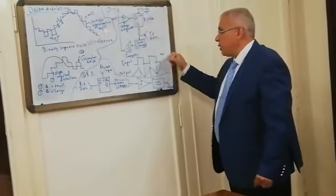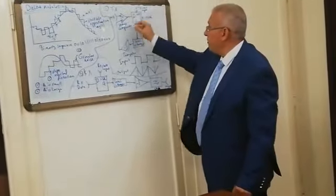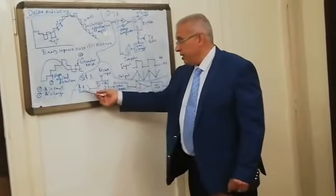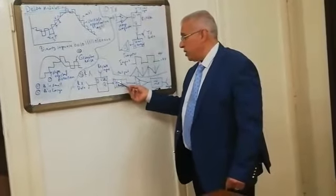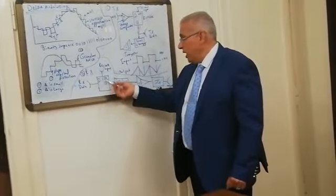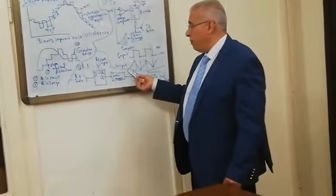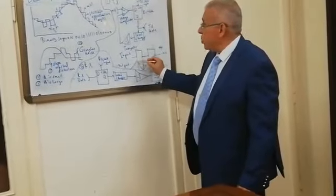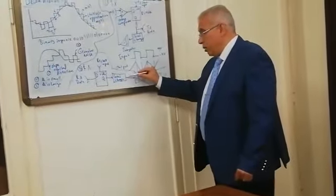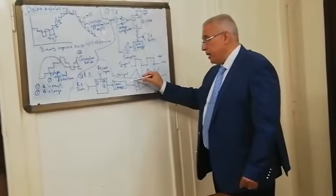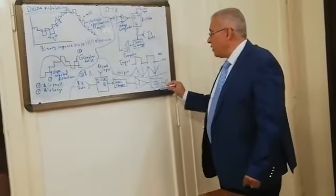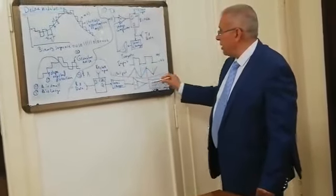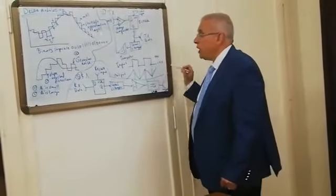Now for the receiver part: we have the received data going into a D-bistable device, outputting one or zero depending on the data input and clock. Then the level changer converts one into minus four volts and zero into plus four volts. The integrator ramps up and down in a zigzag pattern forming the delta approximation. Finally, a low-pass filter smooths the output signal, removing the stepwise component from the integrator to produce a smooth reconstructed output.